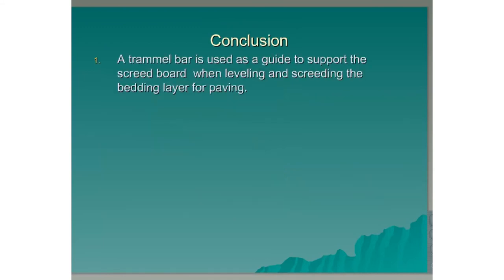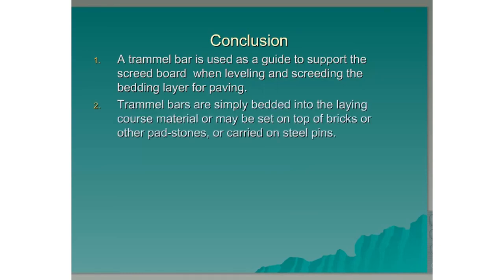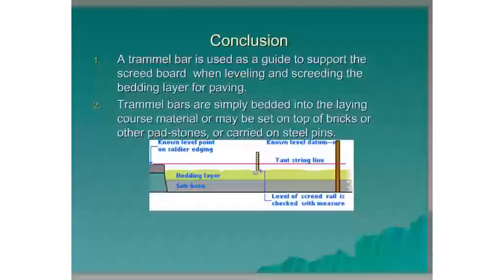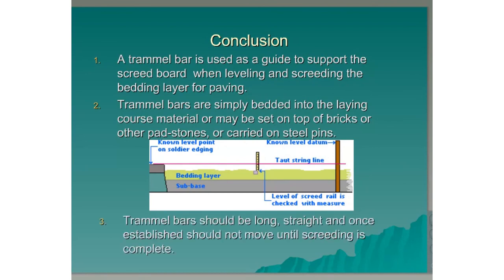Conclusion. A trammel bar is used as a guide to support the screed board when levelling and screeding the bedding layer for paving. Trammel bars are simply bedded into the laying course material — that's into the grit sand — or may be set on top of bricks or other pad stones or carried on steel pins. We can see here how the level and the height of the trammel bar is worked out by measuring down from a taut string line fixed to the finished paving level. Trammel bars should be long, straight, and once established, should not move until screeding is complete.